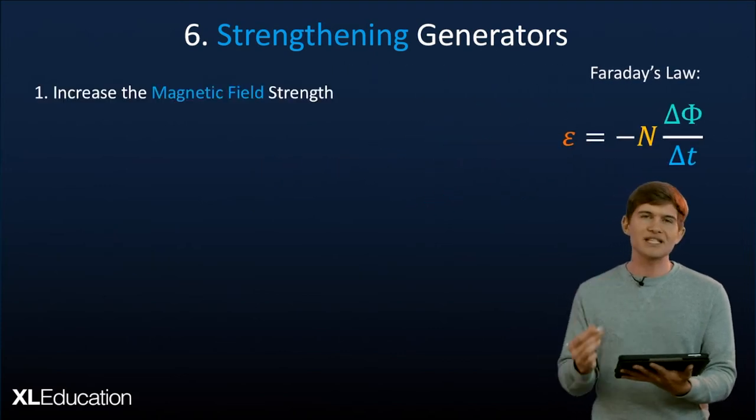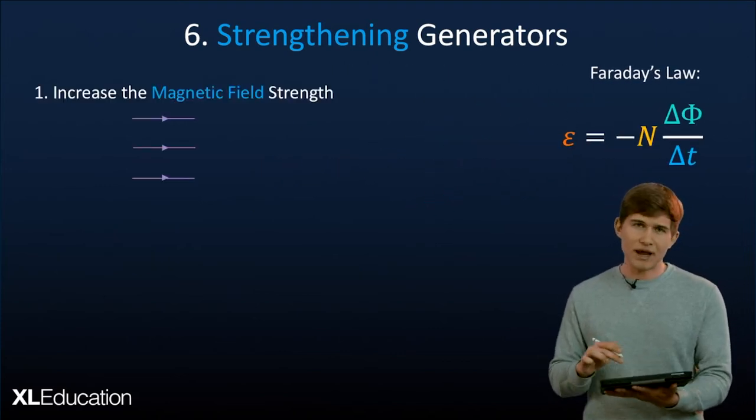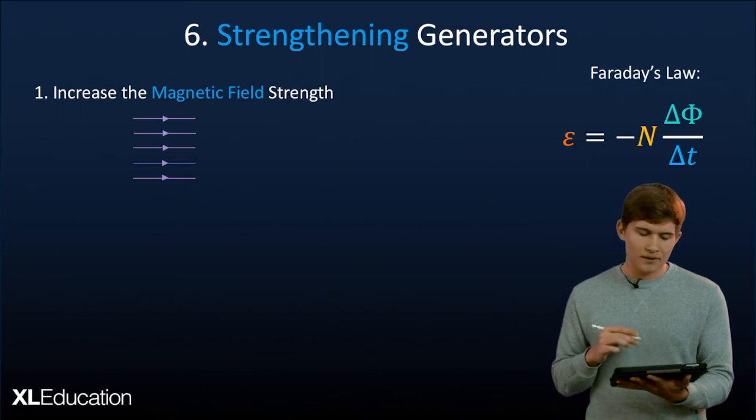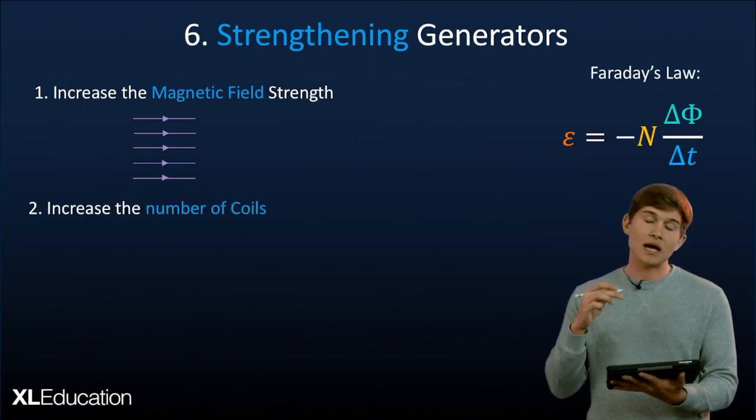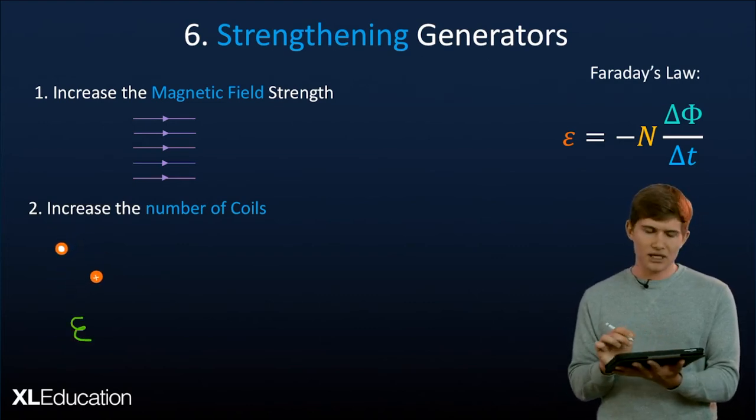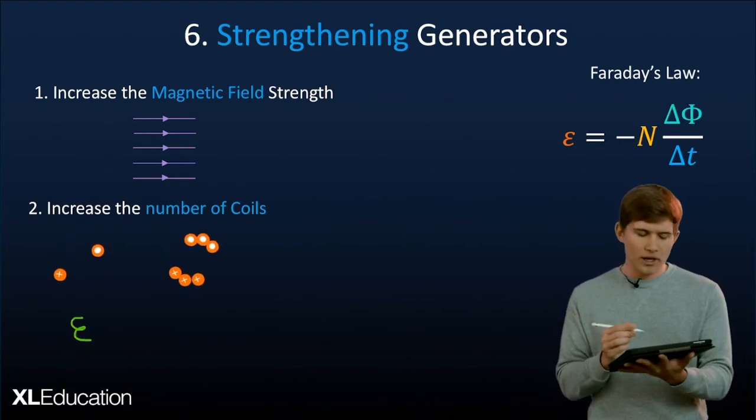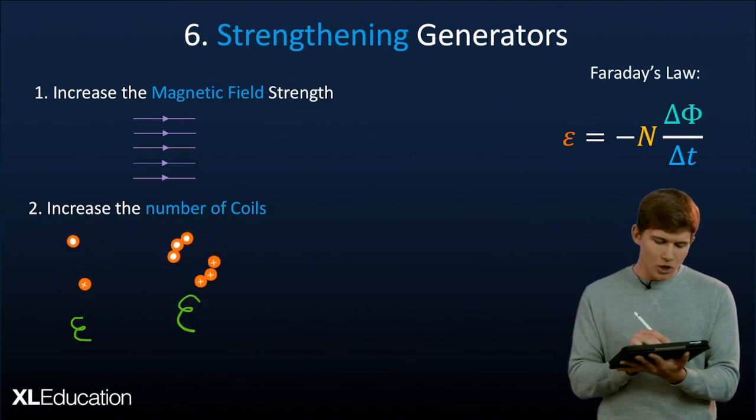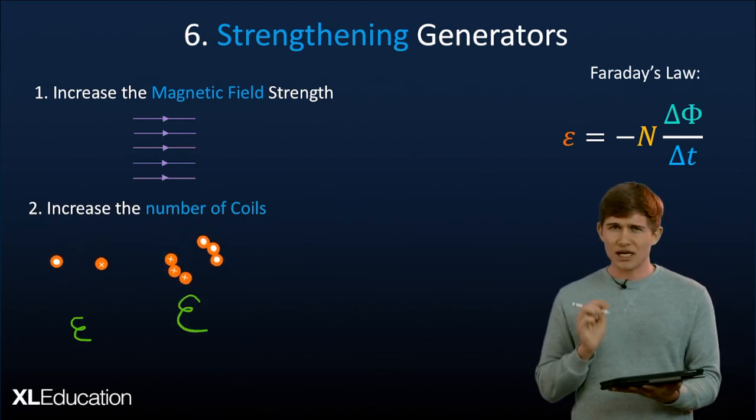The first is that we can increase the magnetic field strength. That simply says we have more magnetic field lines. The second way that we can improve it is by having more coils. So here we have just a singular coil with a very small little induced EMF. But then if we add more here if we add more coils we get a much larger EMF and that's the second way we can do it.